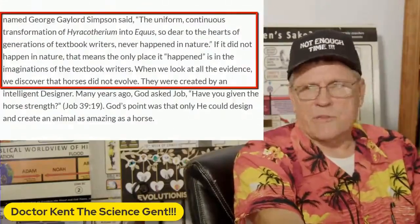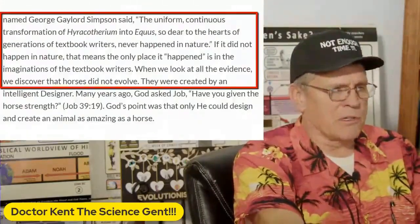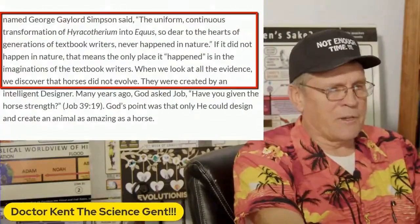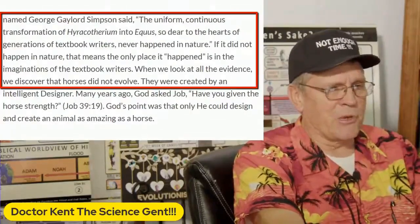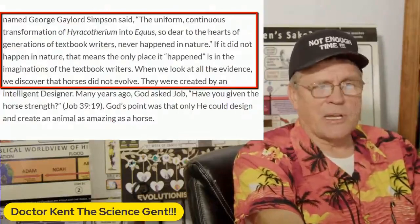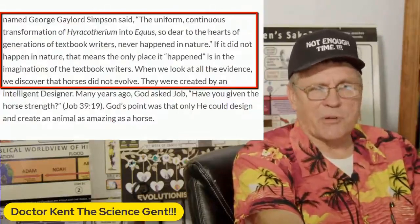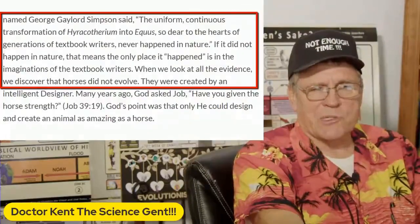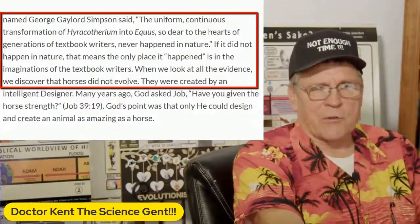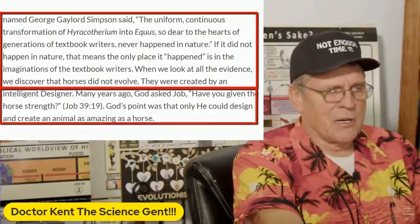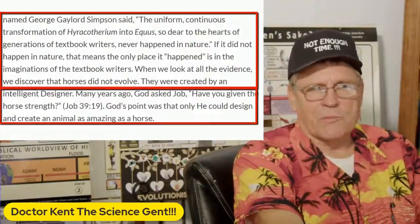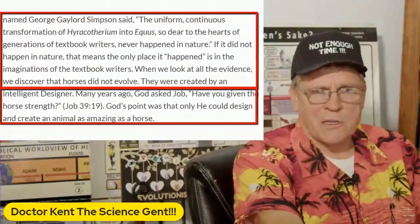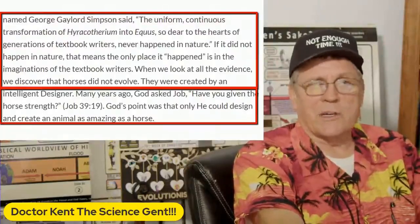G.G. Simpson said the uniform continuous transformation of Hyracotherium to Eohippus, so dear to the hearts of generations of textbook writers, never happened in nature. If it did not happen in nature, that means the only place it happened is in the imagination of the textbook writers. When we look at the evidence, we discover horses did not evolve — they were created by an intelligent designer. Many years ago, God said to Job, who gave the horse its strength? God created the horse and they do just fine.